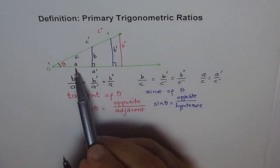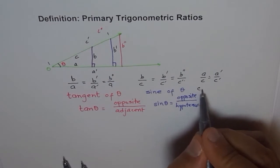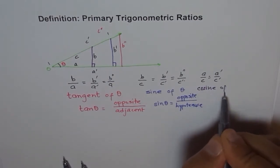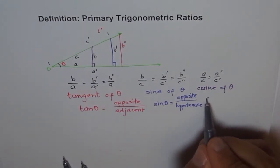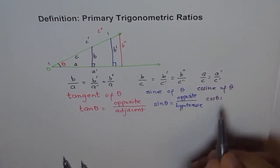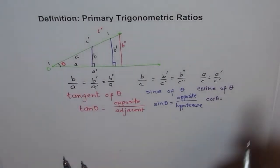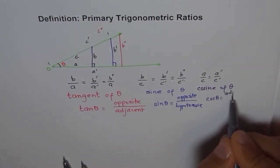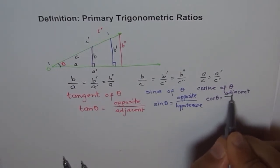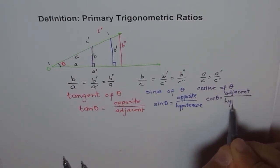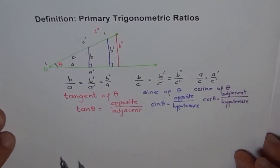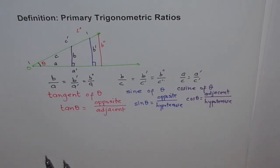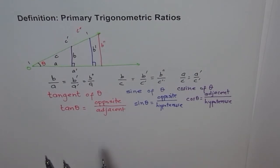And A over C — the name given to this is cosine of theta. In short it is written as cos theta, and it is adjacent over hypotenuse. So we get these familiar names: tan theta, sin theta, and cosine theta.